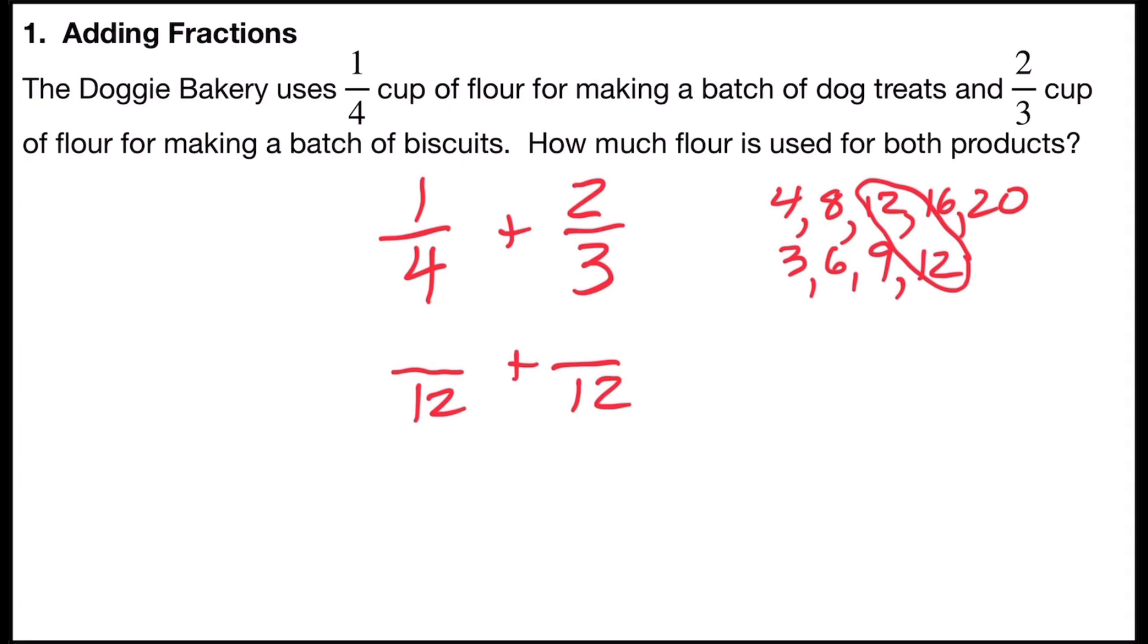one, 3 over 3. 3 times 1 is 3, and so 1/4 will be renamed as 3/12. I'm going to do the same thing with 2/3. 3 times what number gives me 12? And that's 4, so I'm going